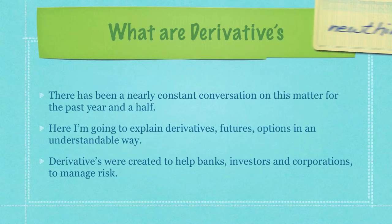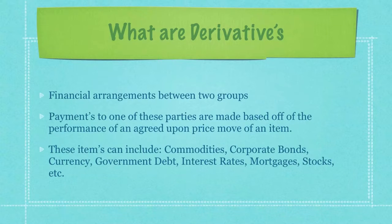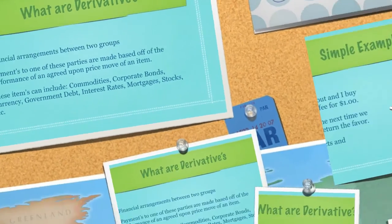Derivatives were first created to help banks, investors, and corporations manage risk. A derivative is a financial arrangement between two groups, and a payment to one of these parties is made based off the performance of an agreed upon price move of said item. These items can include commodities, corporate bonds, currency, government debt, interest rates, mortgages, stocks, and more.